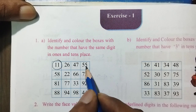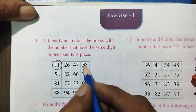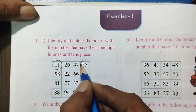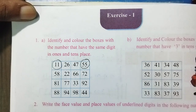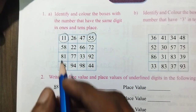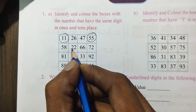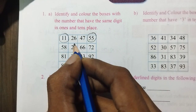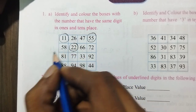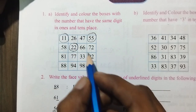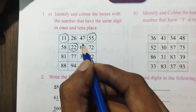We are going to circle. 1s is 5 and 10s is 5. Next, 1s is 2 and 10s is 2. Next, 1s and 10s is 6.